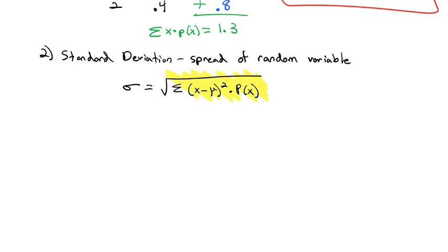Again, this would be a good formula to know how to use. And basically, like we did before with finding standard deviation, we're going to make an extended table. So again, our values for the movies were 0, 1, and 2. Their individual probabilities were 0.1, 0.5, and 0.4.